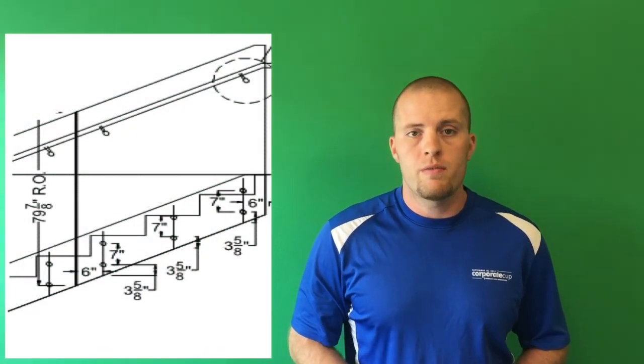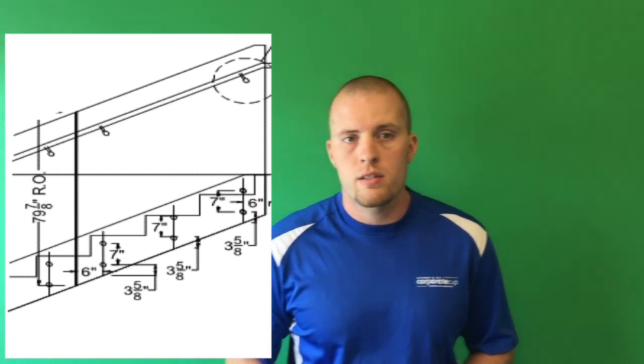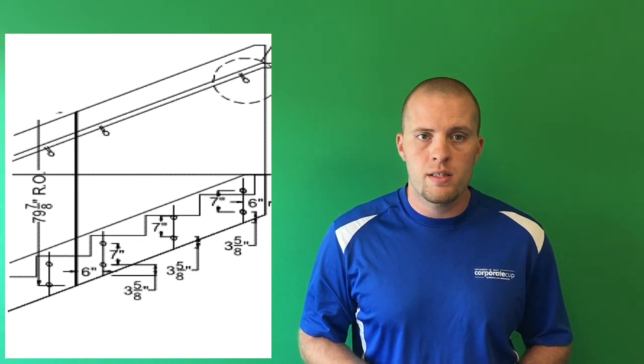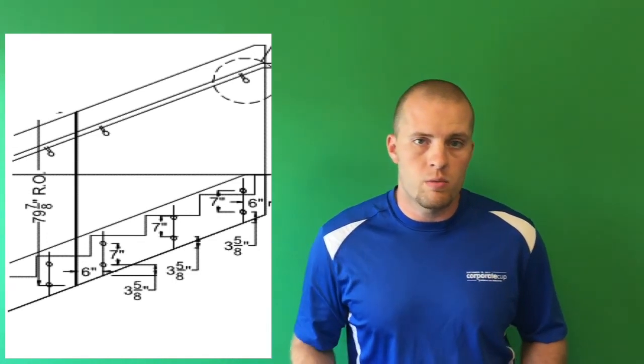One way to remedy this is by spreading out the fittings. Typically, architects don't particularly like this. They like nice, tight, small fittings down at the base of the railing. However, this is one way to remedy it.